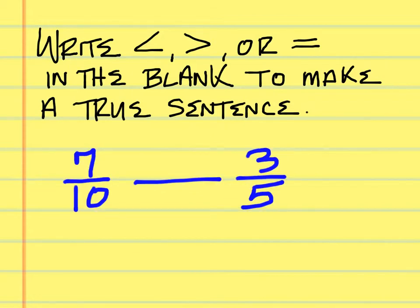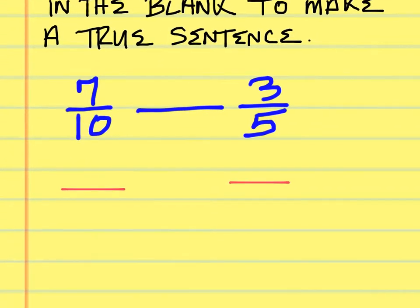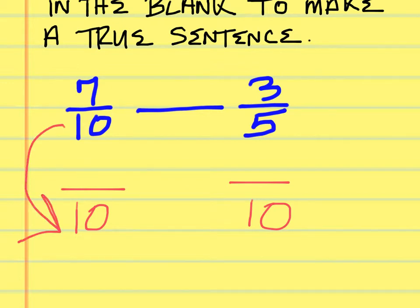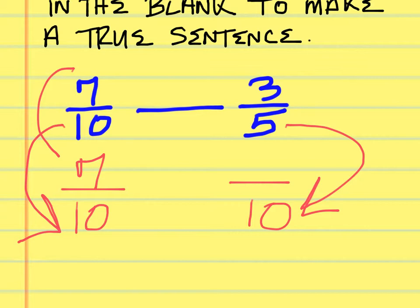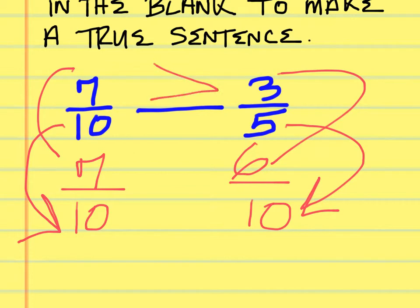On this one we should probably work it out. What would be the common denominator between 10 and 5? 10 is right. What do I have to multiply 10 by to get 10? One — so 7 times 1 is 7. 5 times 2 is 10, so 2 times 3 is 6. Now we have the same denominator — 7 and 6. Which is greater? The 7 — so the mouth opens to the seven-tenths. Seven-tenths is greater than three-fifths.